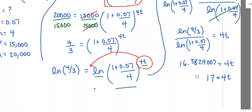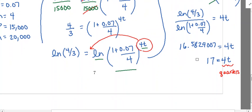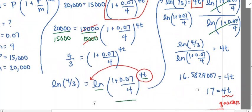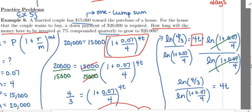Now stop and interpret your answer. Because there is a four in front of the T, this is telling us that we're measuring time in quarters. So it is going to take this couple 17 quarters to save up for their down payment. That is one way of expressing the answer. Quarters are hard for us to think in everyday life, but since everything was quarterly, that's how the answer came out.